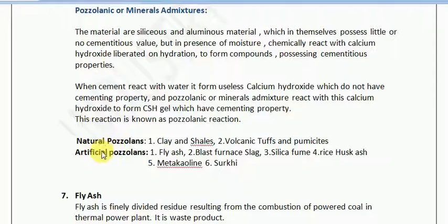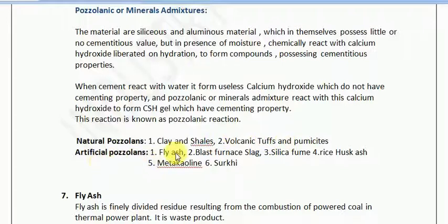There are two kinds of pozzolanic material: natural and artificial. The natural types include clay, shales, volcanic turfs, and pumice. The artificial types include fly ash, blast furnace slag, silica fumes, rice husk ash, metakaolin, and surki.